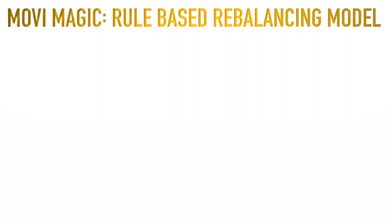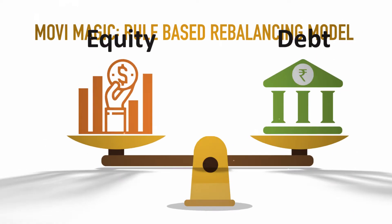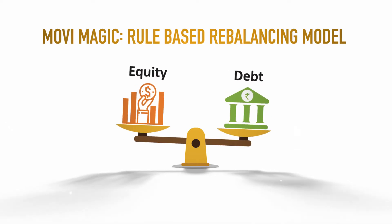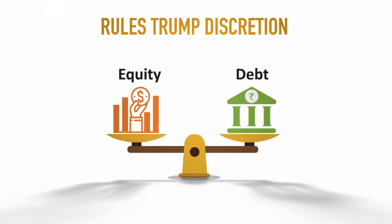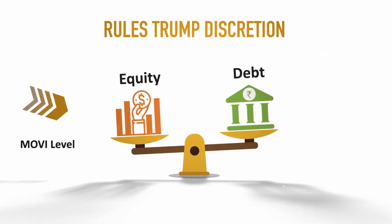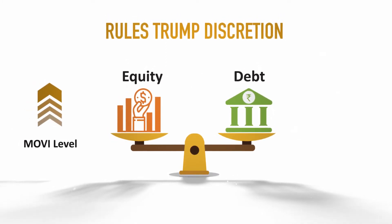In the Motilal Oswal Dynamic Fund, we use the proprietary Motilal Oswal Value Index, or MOVI, to determine whether markets are overvalued or undervalued, and use this indication to dynamically allocate between debt and equity. This automated rebalancing helps take advantage of the upside and also protects the downside without any human intervention.